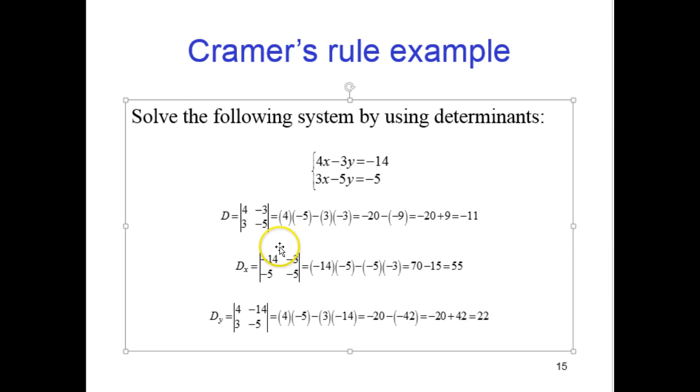So we have, for our determinant, we got a negative 11, our d sub x, we got a 55, and our d sub y, we got a 22.